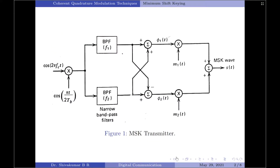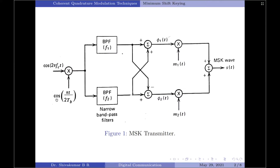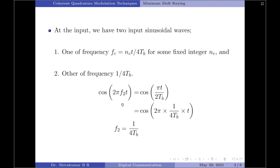Let us start with the MSK transmitter. At the input, we have two input sinusoidal waves — one of frequency fc and another of frequency 1 by 4tb. The first signal is centered at frequency fc, which is given by nc into t divided by 4tb, where nc is any integer. The second signal, as you can see, is given by cos(pi·t / 2tb), centered at frequency f2.